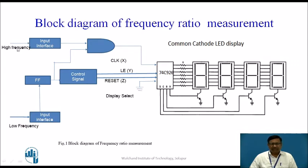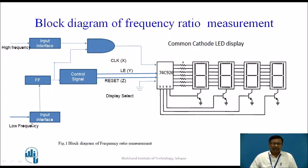Whatever the frequency of the input signal — whether it is sinusoidal or any other type — it is converted into a digital square wave here, and appropriate voltage levels are maintained using this input interface circuit. It is then given to one input of the AND gate. The other input of the AND gate comes from a flip-flop which divides the input frequency by 2, where the input is the low frequency signal passed through another input interface for signal conditioning.